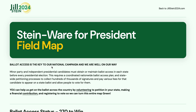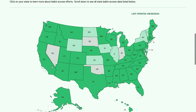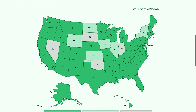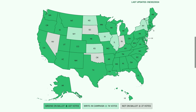Looking at the field map for Jill Stein 2024, it looks like this was last updated middle of September or so, September the 20th roughly. We have about 435 to 440 votes for Greens on the ballot, about 75 votes for write-in status.